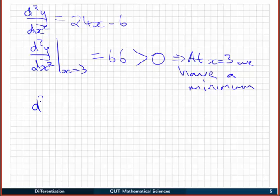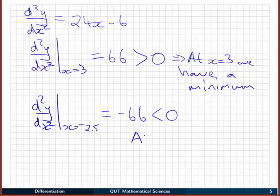Let's check x = -2.5. d²y/dx² at x = -2.5 equals 24×(-2.5) = -60, take away another 6 is -66. That's less than 0, so at x = -2.5 we have a local maximum.